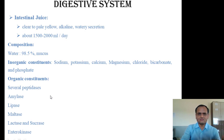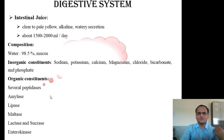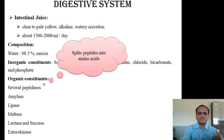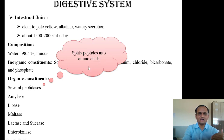The functions of intestinal juice are carried out by the enzymes present within it. Due to the presence of peptidases, the intestinal juice is involved in splitting peptides into amino acids. Proteins are made of amino acids linked by peptide bonds, and the enzyme peptidase breaks down these peptides into amino acids.